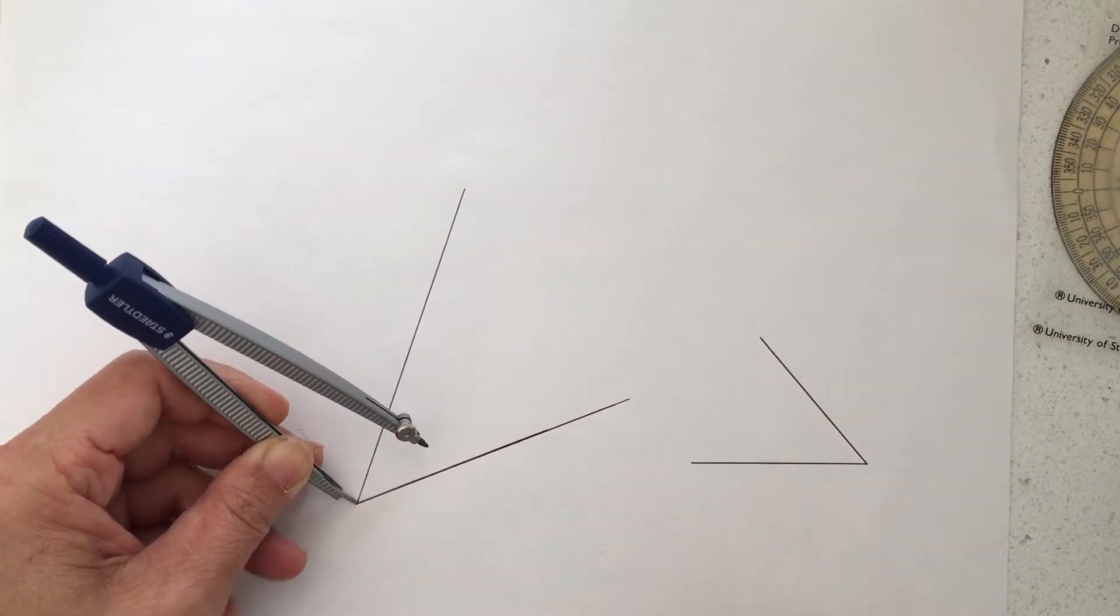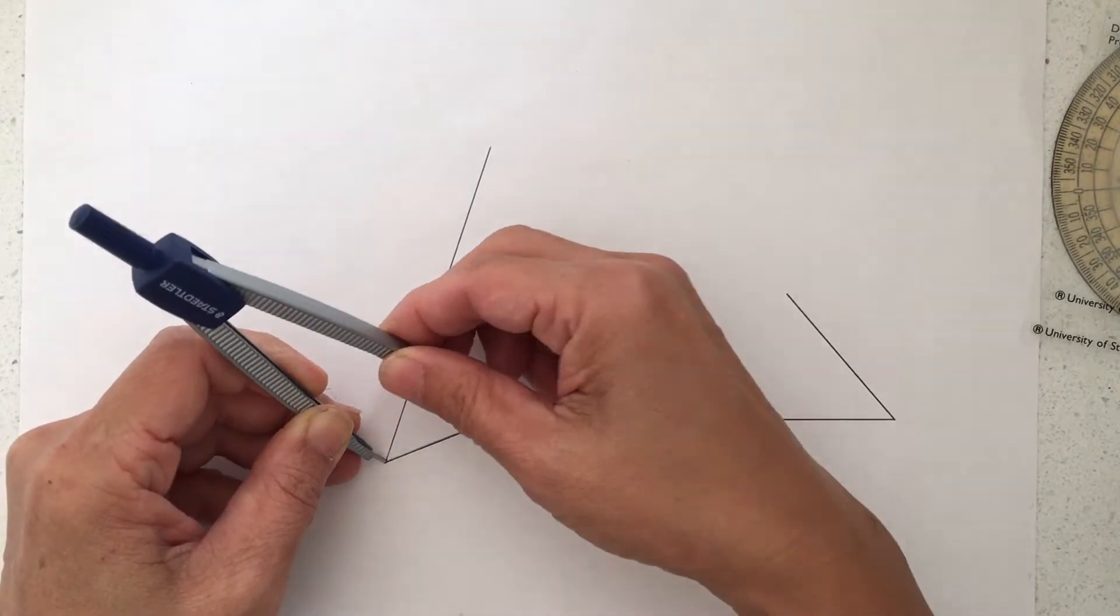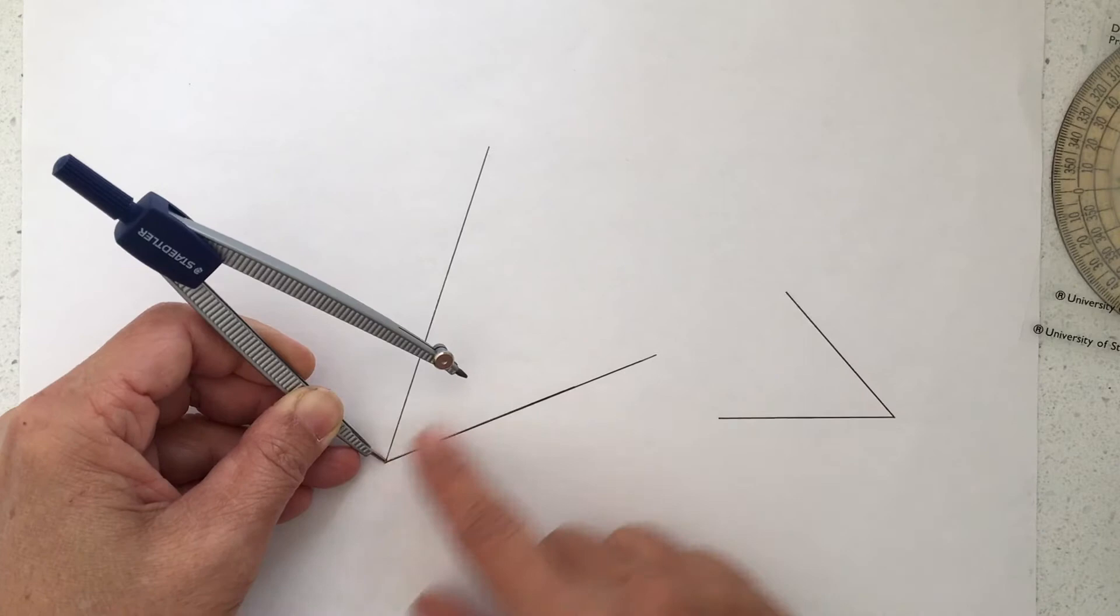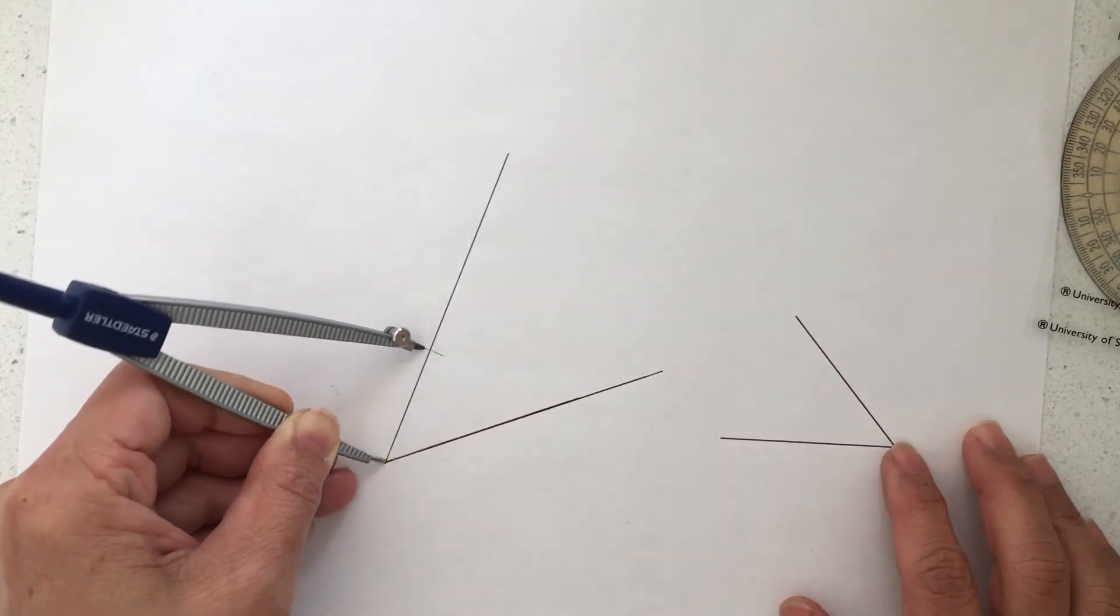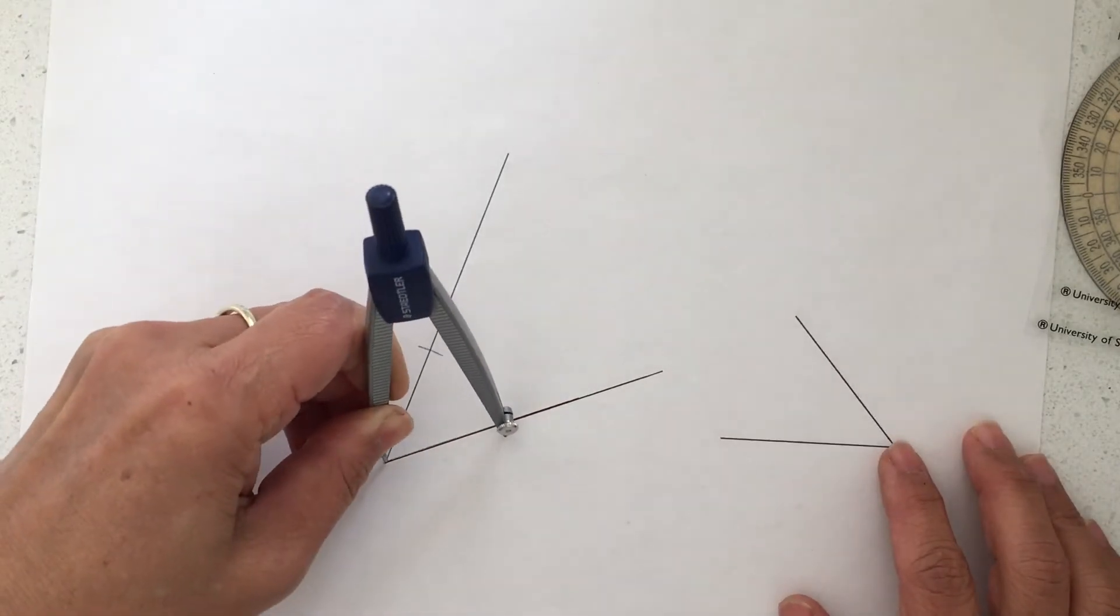Put the pin in the center of the angle and anywhere, whatever distance you want. You mark the distance for both sides.